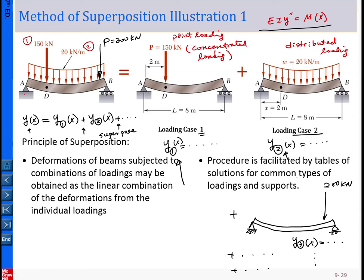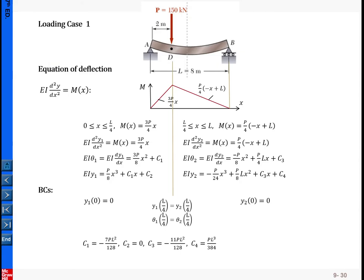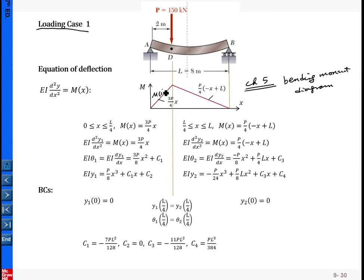For loading Case 1, this is the exercise from Section 1 that we did before. I utilize the moment diagram — referring to Chapter 5 on how to draw the shear and bending moment diagram. That is the result from there. You can see this is M(x): in the first segment it equals one expression, and in the other segment it equals another, so we put it into two segments. In the first domain, M equals this expression.